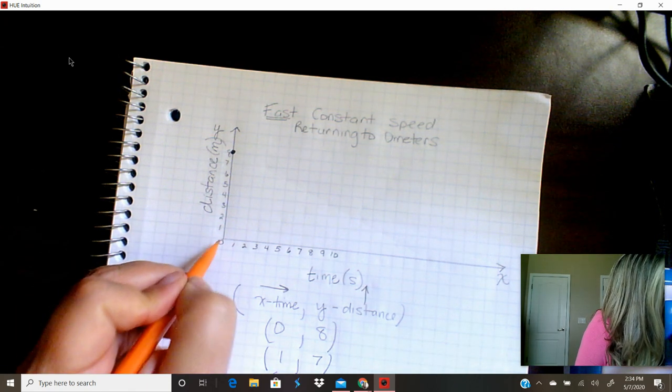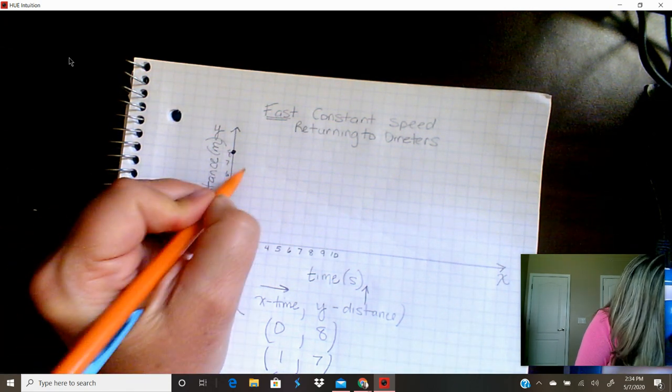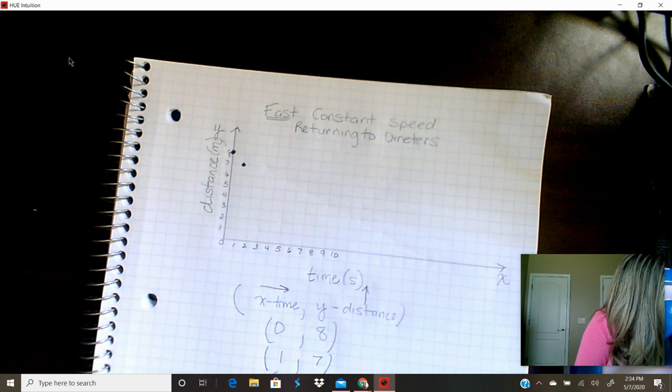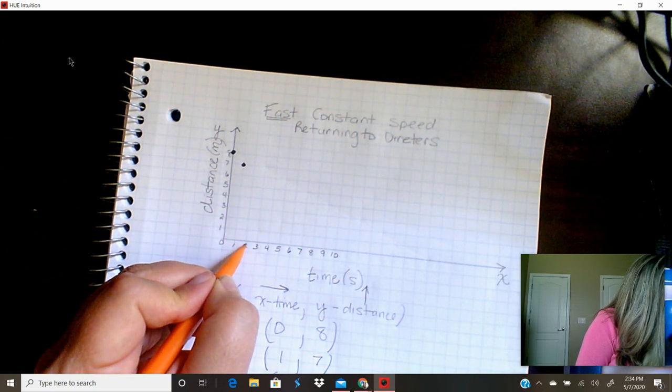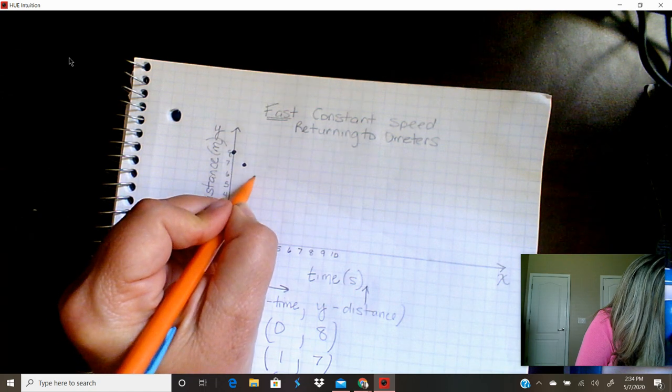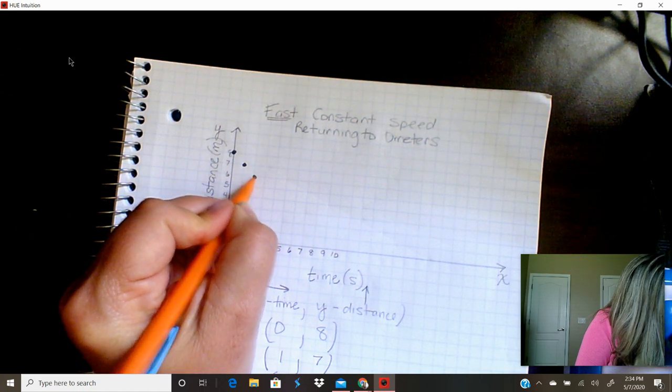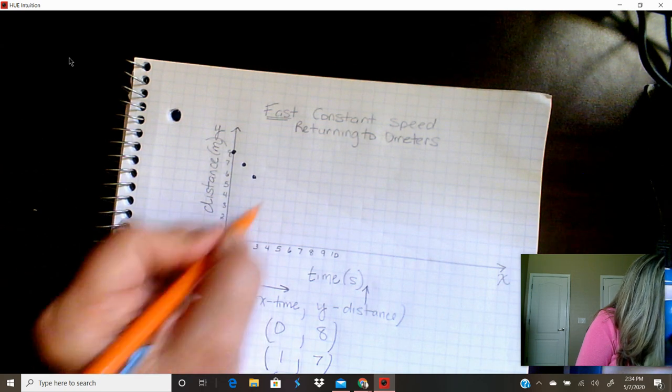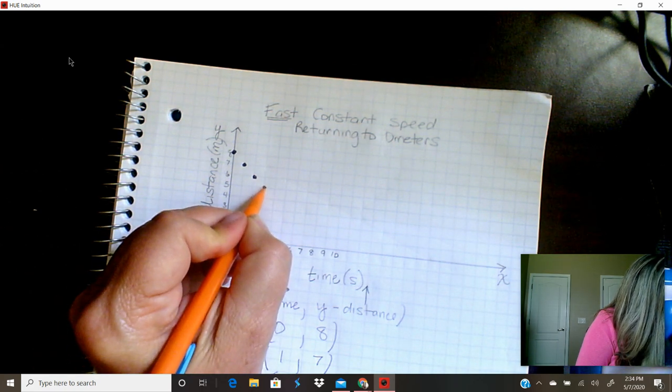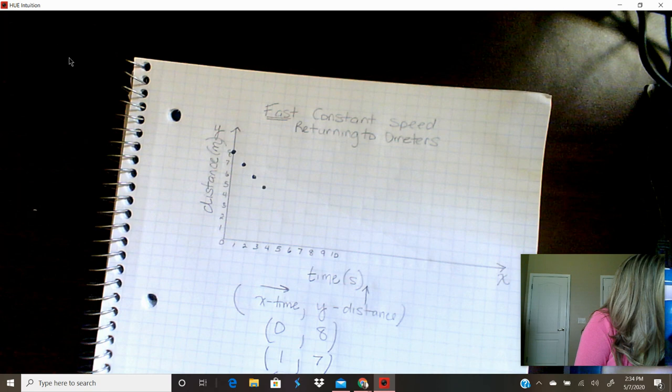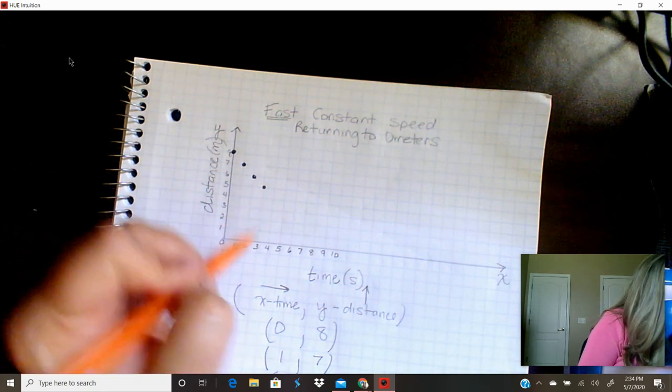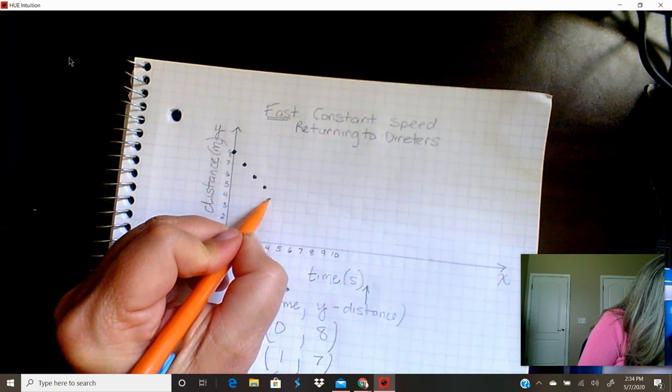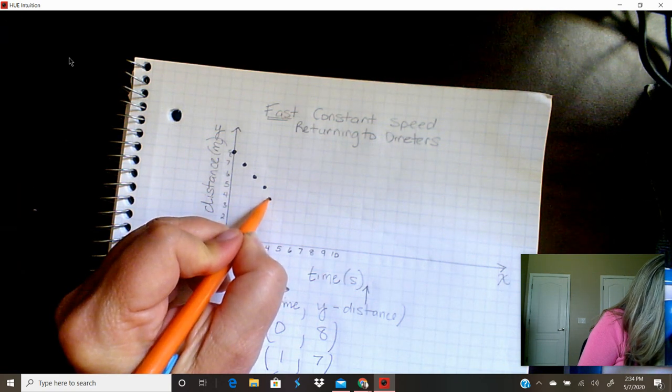Then the next one is 1, 7. We're going to crawl over to 1 and climb up to 7. The next one is 2, 6. We're going to crawl over to 2 and climb up to 6. The next one is 3, 5. We're going to crawl over to 3 and climb up to 5. Then we're going to go to 3 and a half, which will be right here in the middle, and climb up to 4.